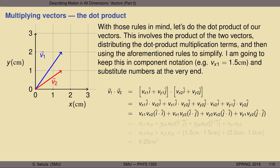The middle two terms cancel out to zero and go away. The first and fourth terms are simply multiplied by one. Simplifying, the dot product of v1 and v2 is just the product of their x-components added to the product of their y-components. That's the shortcut: the dot product of any two vectors is the sum of the products of corresponding components — x with x, y with y, z with z. Now I can plug in numbers.